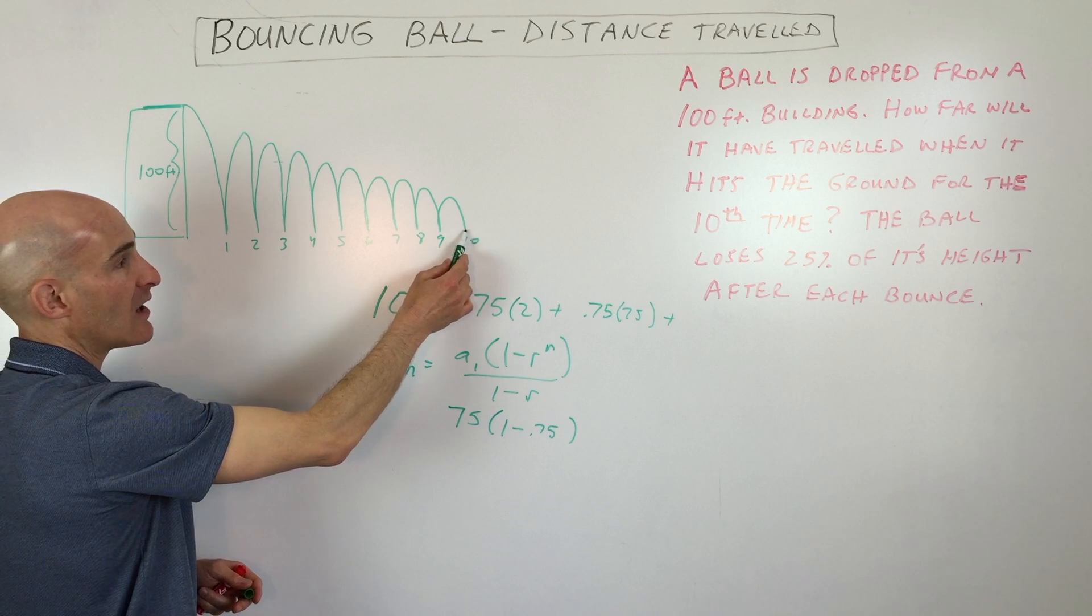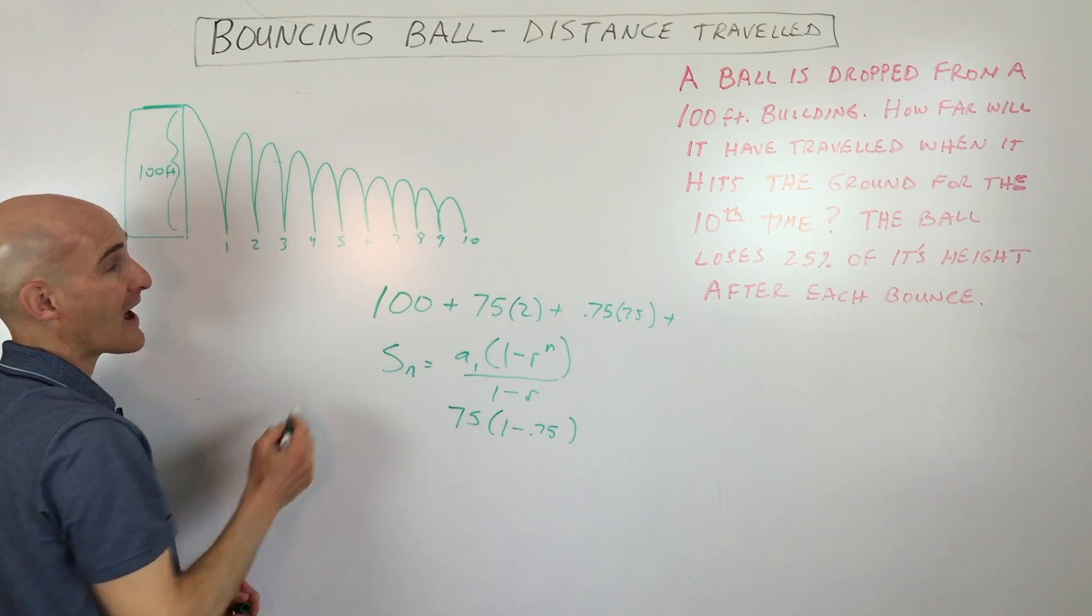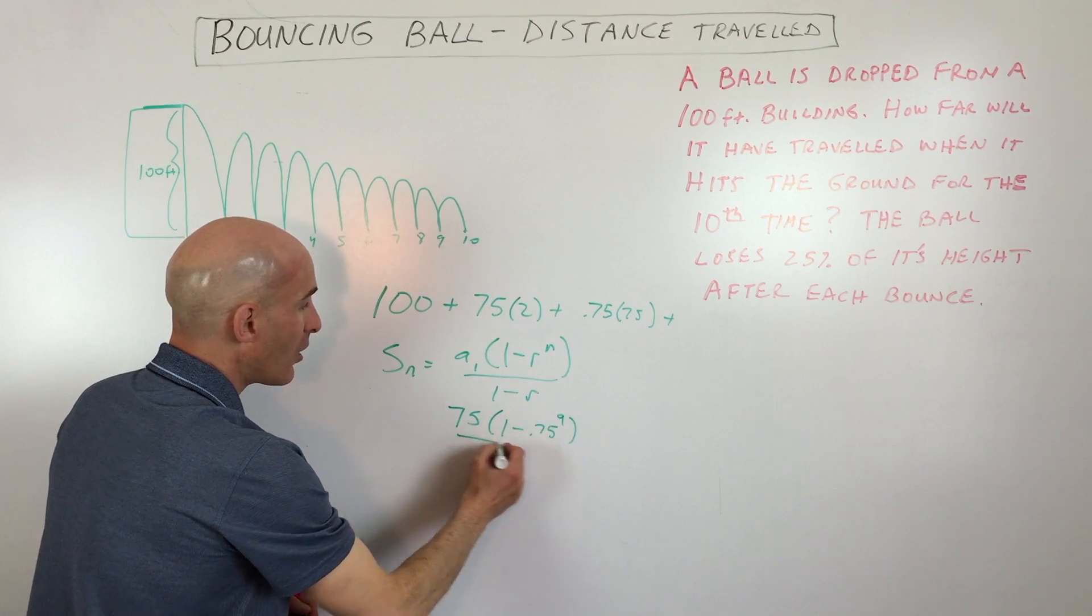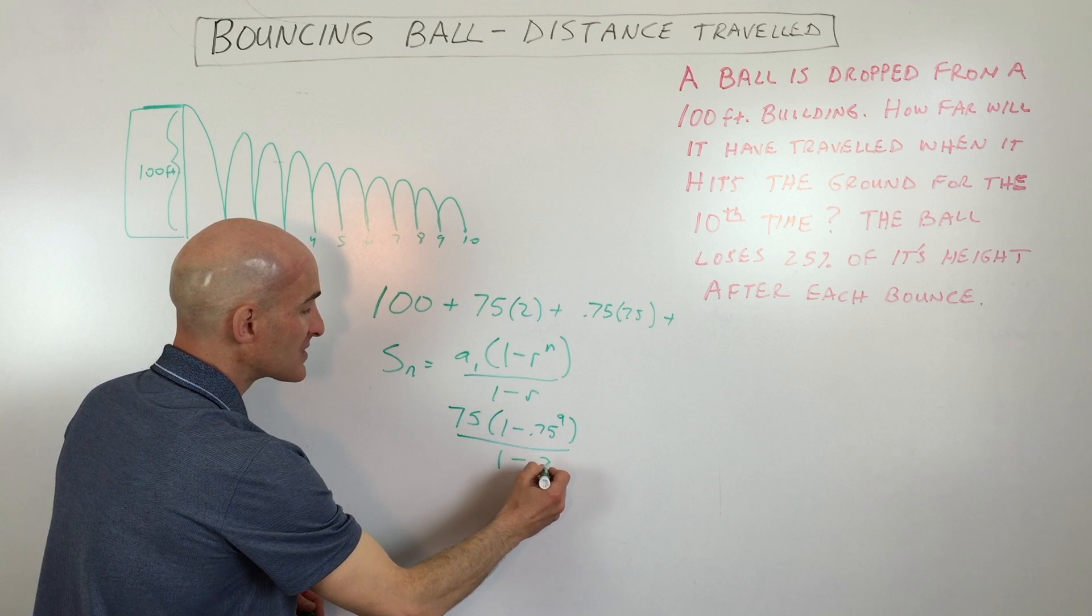Even though when it hits that ground for the 10th time, it's not continuing. So there's going to be nine terms from here to here. So n is going to be nine, all divided by 1 minus 0.75.